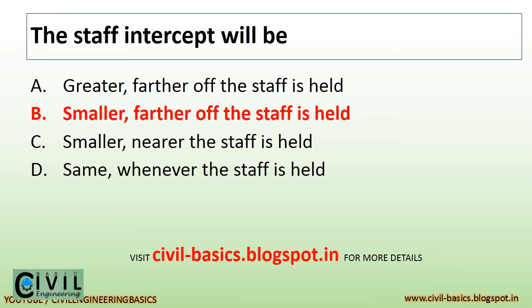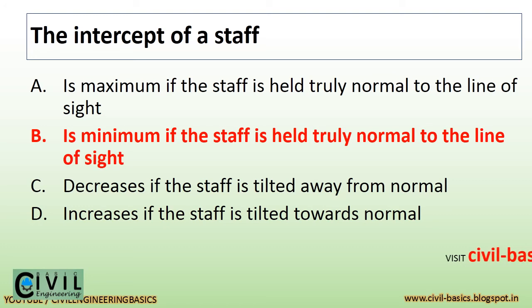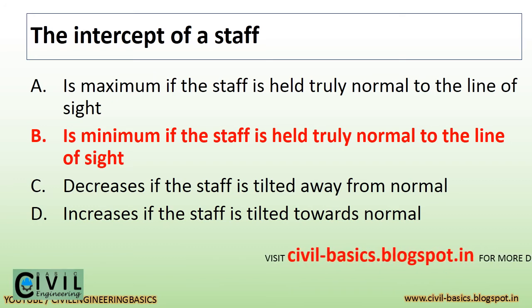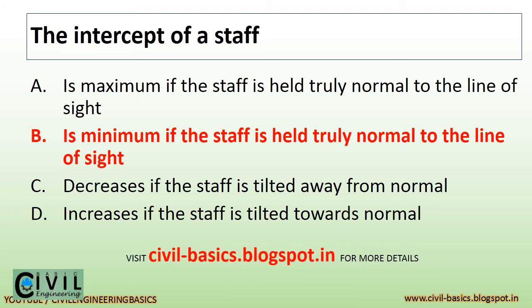The staff intercept will be smaller the further off the staff is held. The intercept of a staff is minimum if the staff is held truly normal to the line of sight.